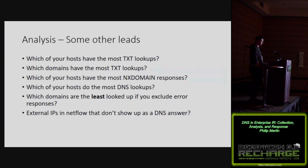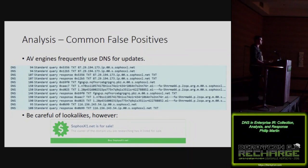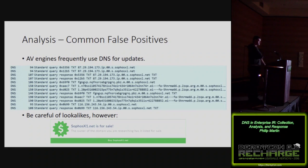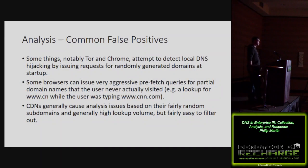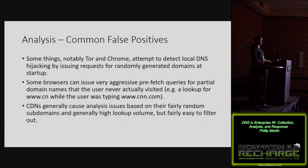False positives to be aware of: AV engines are notorious for DNS tunneling-like behavior. I've seen it with Sophos, McAfee, and others that use DNS as a tunneling mechanism — primarily because it's basically free for them in terms of load compared to running HTTP servers. Tor, Chrome, and several other browsers will look up domain names they expect not to exist just to test for DNS hijacking in the environment they're in.